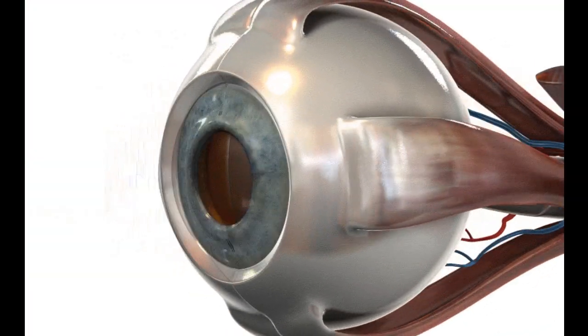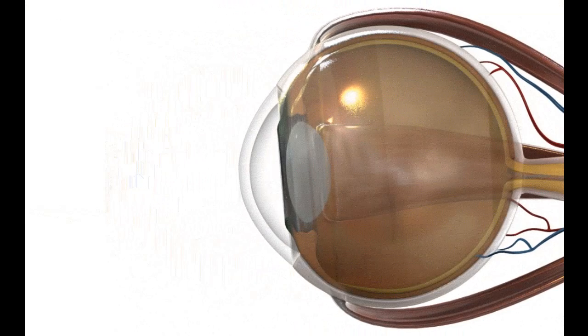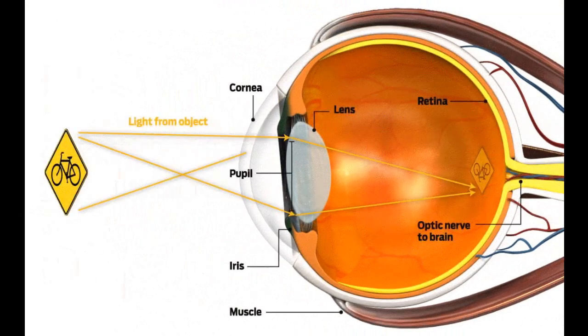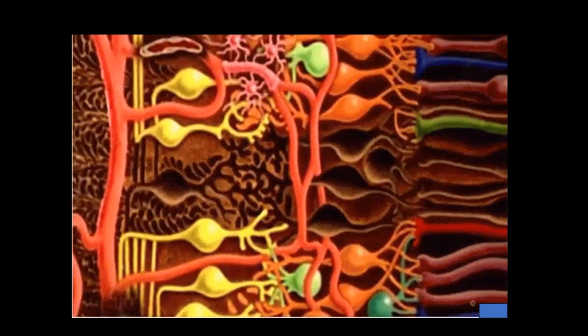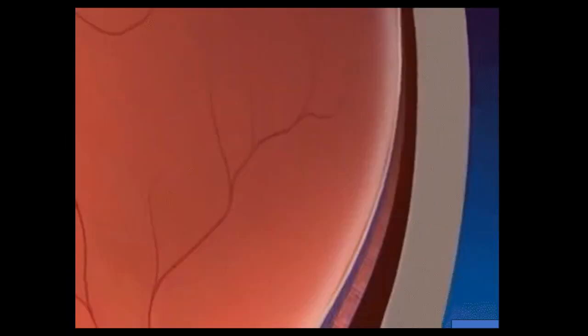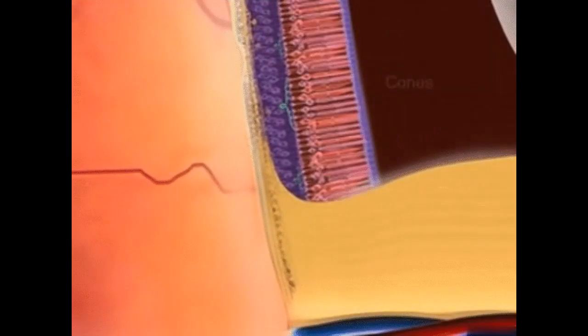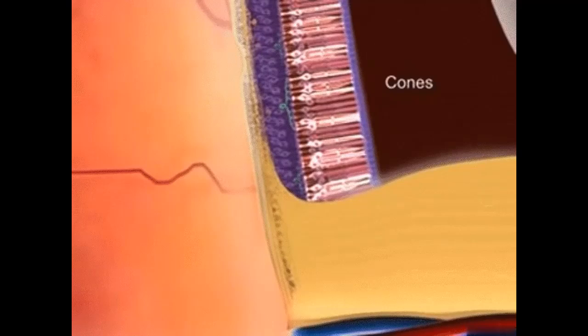Visual pathway: Light enters the eye through the cornea, passes through the aqueous humor, pupil, lens, and vitreous humor, and finally reaches the retina. Photoreceptor cells — rods and cones — convert light into electrical signals. These signals are processed by other retinal cells and transmitted via the optic nerve to the brain's visual cortex, where they are interpreted as images.